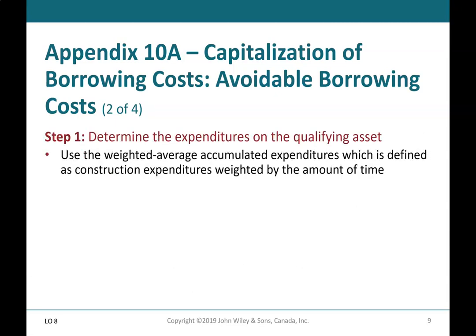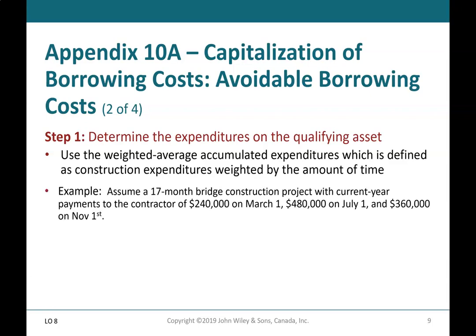Step 1: Determine the expenditures on the qualifying asset. Use the weighted average accumulated expenditures, defined as construction expenditures weighted by the amount of time. Example: assume a 17-month bridge construction project with current year payments to the contractor of $240,000 on March 1st, $480,000 on July 1st, and $360,000 on November 1st.